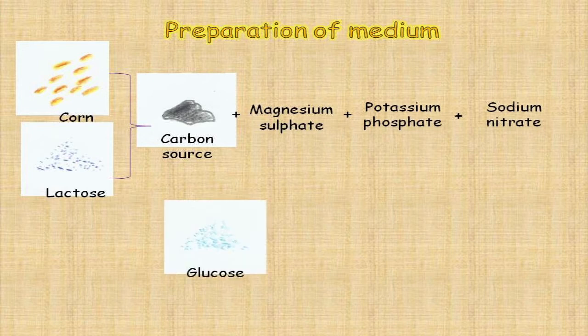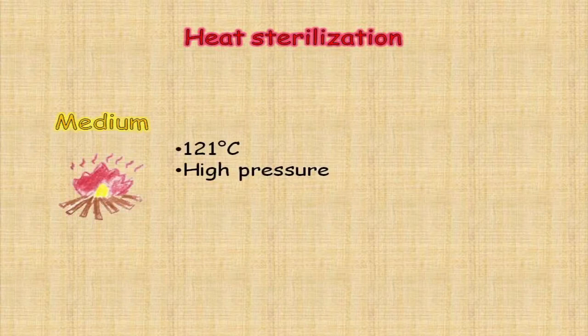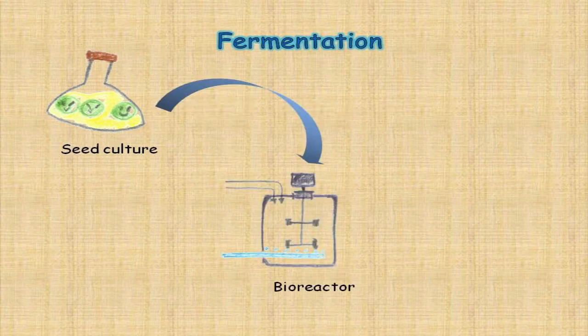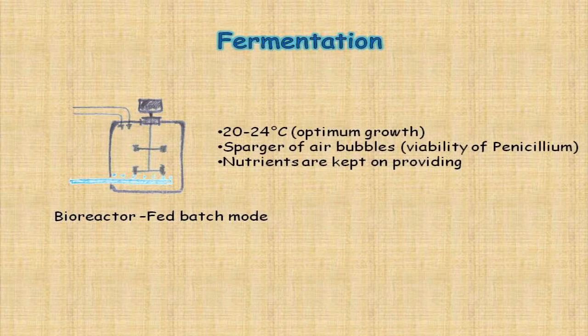Glucose cannot be used as it will inhibit penicillin production. After that, sterilization of media under high temperature and pressure to kill unrelated contaminants is done. Fermentation also requires a seed culture prepared for scale-up purposes. The seed culture is placed into the bioreactor with the prescribed media and goes through a fed-batch fermentation, kept under 20 to 24 degrees Celsius with aeration, and nutrients are provided little by little over time to maximize the production of secondary metabolites.